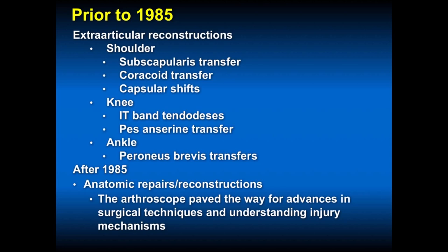After 1985, anatomic repairs and reconstructions were started via arthrotomy, then arthroscopy. The arthroscope paved the way for advances in surgical techniques and understanding mechanisms of injury, particularly in the shoulder where we made diagnoses of SLAP tears and labrum tears. Prior to the early 80s, we didn't really understand the labrum and how it is injured in the throwing athlete. So we started doing scopes, figured it out, and went back to the mechanisms of injury.